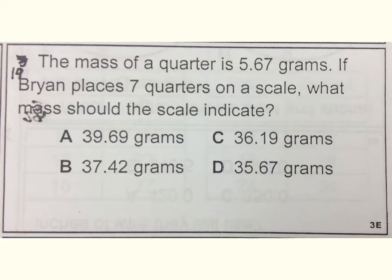Number nineteen. The mass of a quarter is five and sixty-seven hundredths grams. If Brian places seven quarters on a scale, what mass should the scale indicate?